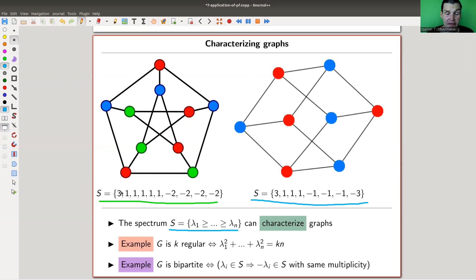So here are two examples, kind of the easiest ones, there are more, of how the spectrum can characterize graphs. And I will do the calculation for you. That's a bit tricky because I'm not really good at calculations. Hopefully this will work out. So for example, let's do the second one first, the one in purple.